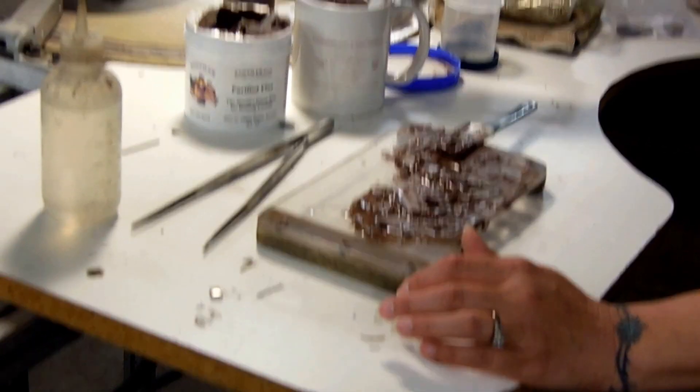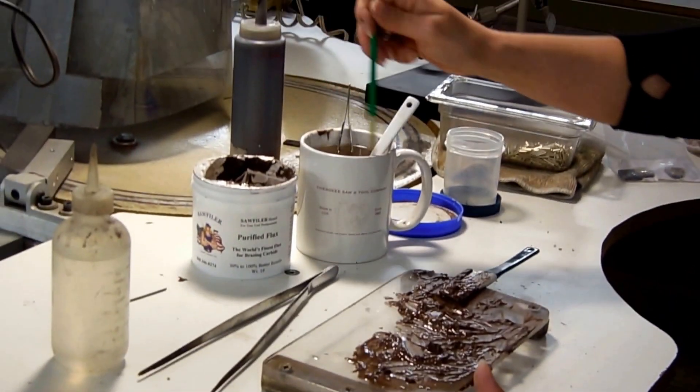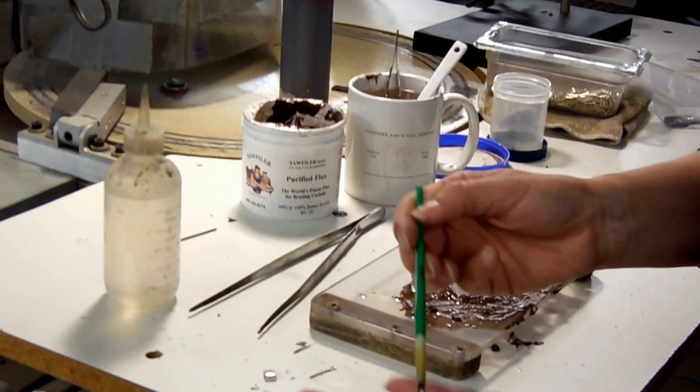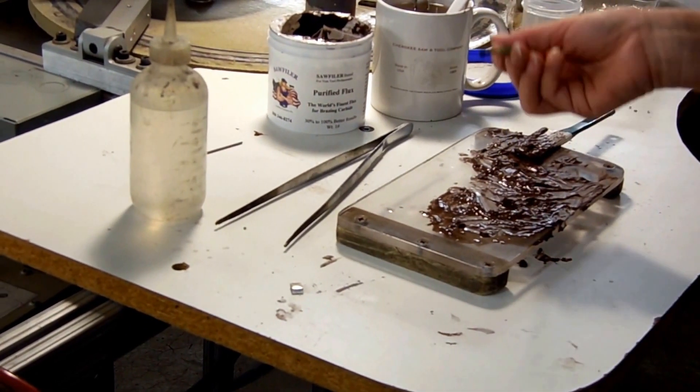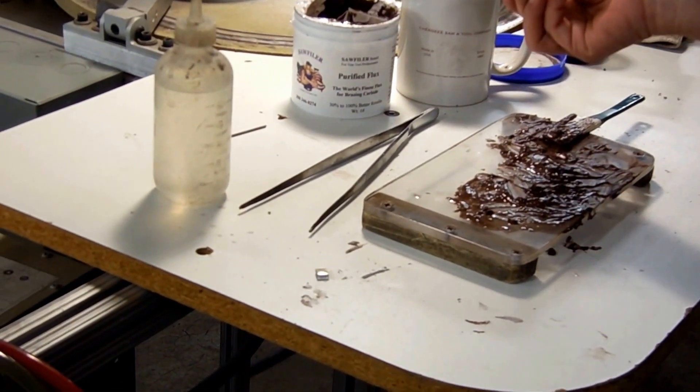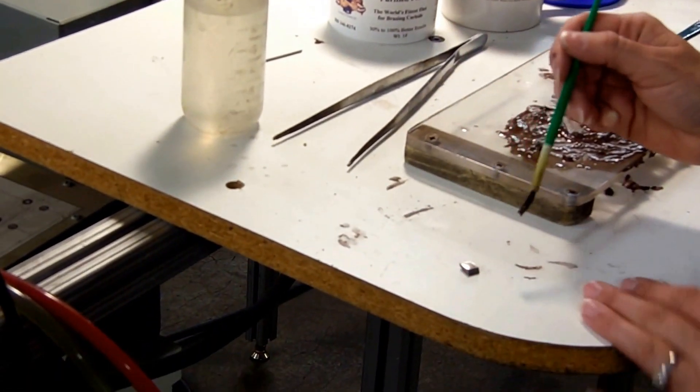Okay, so I'm going to use my paint brush. It's just a small standard paint brush. Got it at the dollar store. Doesn't have to be fancy. Just need something to transfer the flux directly on the carbide tip.